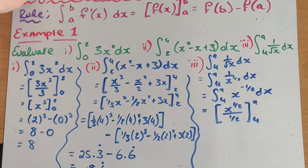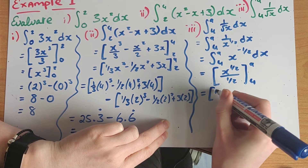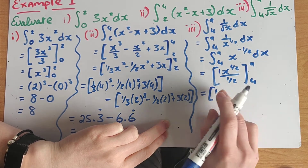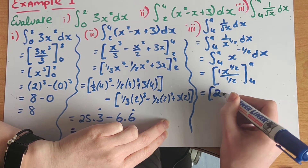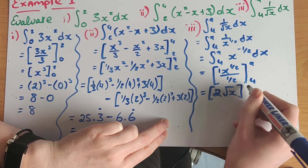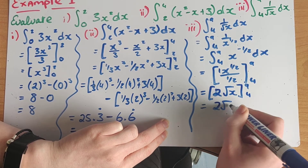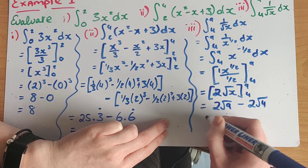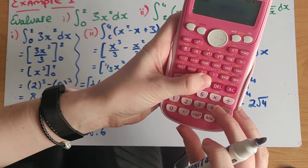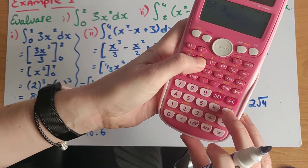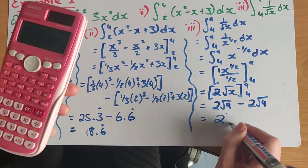Now what I need to do is simplify: one divided by a half is just going to give me two. So x to the power of a half is the same as root x, giving me two root x evaluated from four to nine. What I really have is two root nine minus two root four, which if I put into my calculator gives me my final answer. Two root nine minus two root four equals just two.